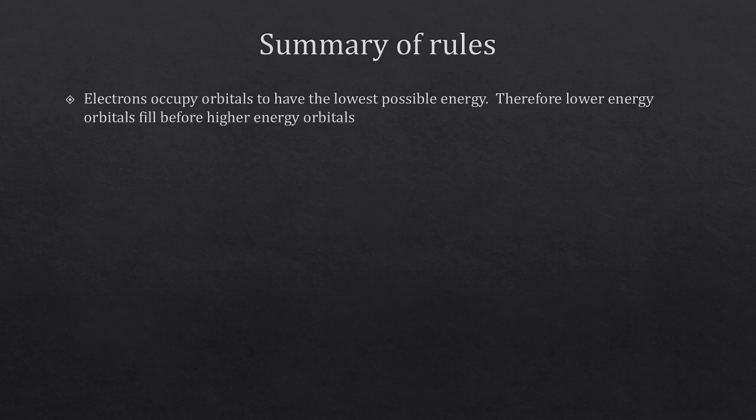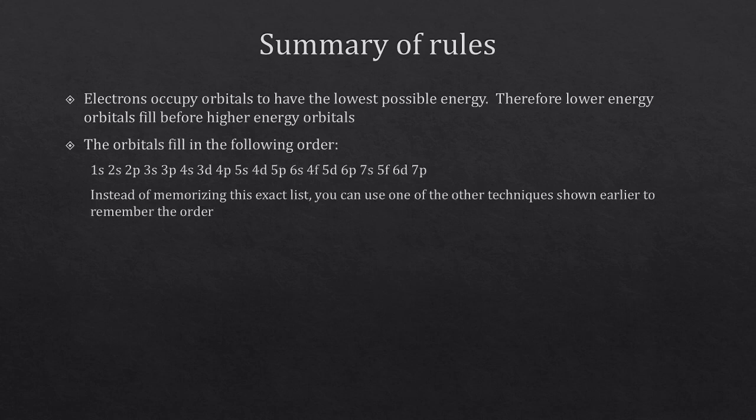The third and final way to learn the filling order is to memorize the list: 1s 2s 2p 3s 3p 4s 3d 4p 5s 4d 5p 6s 4f 5d 6p 7s 5f 6d 7p. I don't think this is the best way, but for some people memorizing a list is the easiest approach, so if that works for you it's okay. If you don't like the list, use either the periodic table s/p/d/f block approach or the diagonal chart.